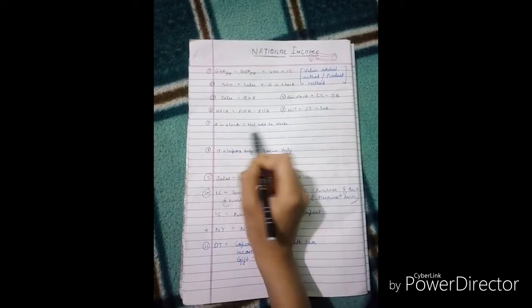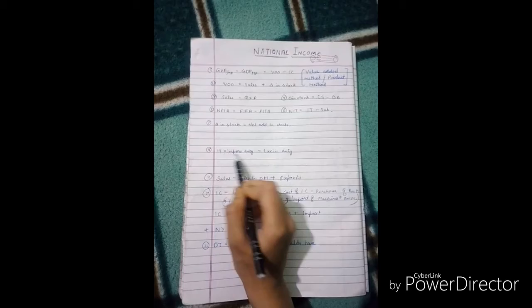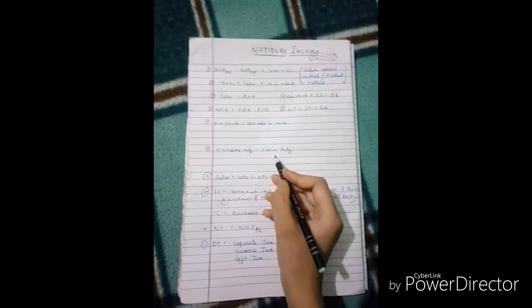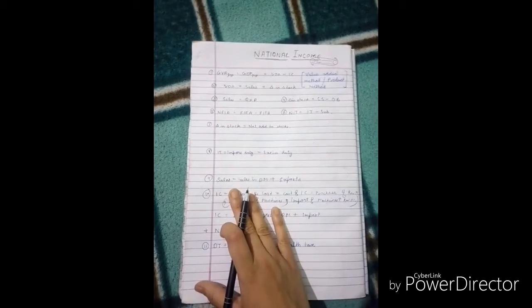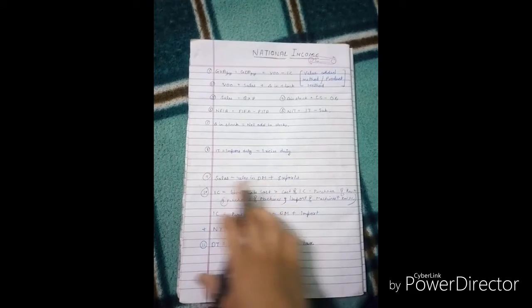So change-in-stock can be called Net Addition to Stocks. And indirect taxes can be called Import Duty or Excise Duty. So sales, we have seen sales in domestic market plus export, then we can calculate sales if we don't give sales directly in the question.